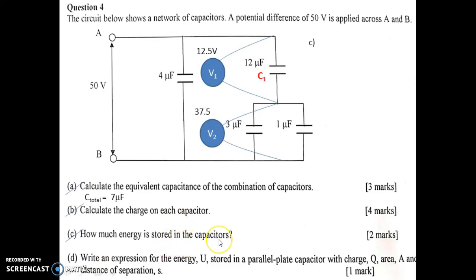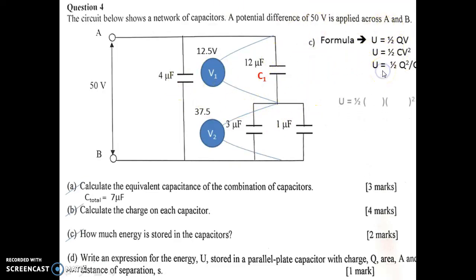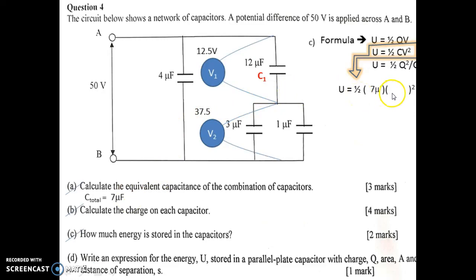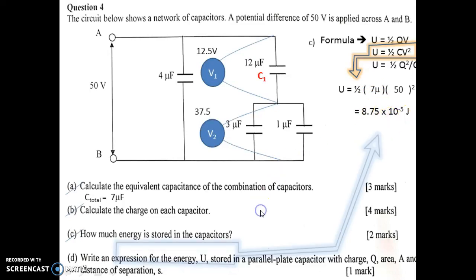Question C: how much energy is stored in the capacitors? The formula is U equals half QV, or equivalently U equals half CV squared (by substituting Q equals CV), or U equals half Q squared per C. We choose U equals half CV squared. The total capacitance is 7 µF from question A, and the voltage across the whole combination is 50 V. Substituting, we get 8.75 times 10⁻³ J. This is the energy stored in the combination of the capacitors.